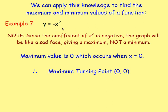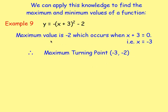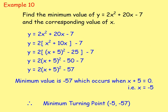For y equals negative x squared: remember if it's positive the graph is a smiley face giving a minimum, but here it's negative — a sad face — so you have a maximum. The maximum value is zero, occurring when x is zero. For y equals negative (x + 3)² minus 2: the minimum value of the squared part is zero; the negative flips it to a maximum; subtract two and it drops to -2. So the maximum value is -2, occurring when x equals -3.